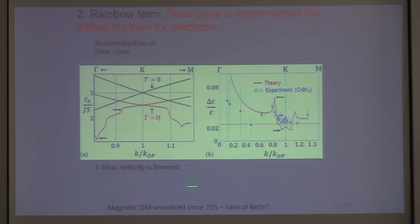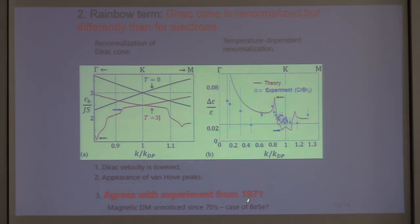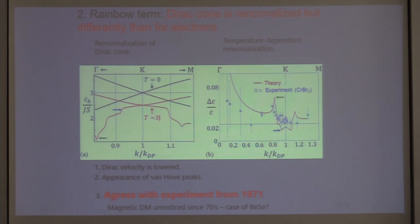What I would like to conclude is: the Dirac velocity is lower in CrBr₃ than naively expected, with van Hove peaks appearing in the self-energy. These results agree reasonably well with the experiments — the unknown experiments from 1971. My suspicion is that if you look at the surface of this material, you might see the drumhead states — elevated susceptibility from this quasi-non-dispersive surface state. Optimistically, this could be the magnetic version of bismuth selenide — some samples sat on a shelf for 40 years until somebody decided to look and find non-trivial, essentially topological features.